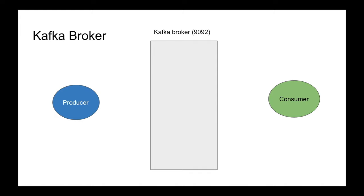That's how RabbitMQ works, that's how web servers work, that's how pretty much any networking application works. You have a server, you got to listen on a port. The default port for Kafka is 9092 and it's called a broker.